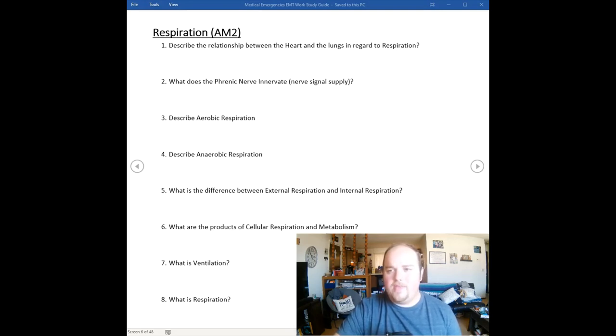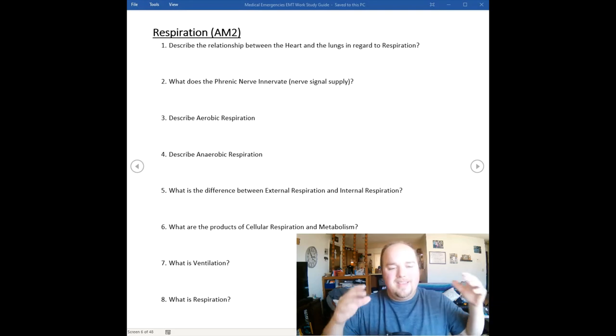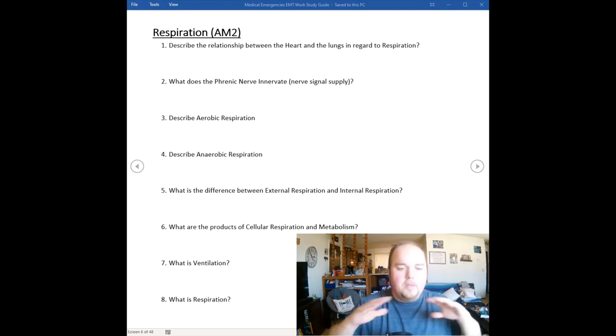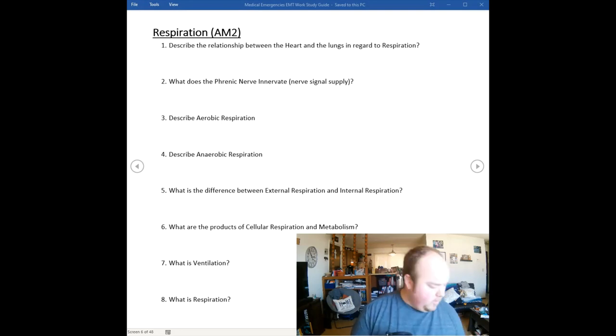External respiration is the exchange of respiratory gases between the alveoli and the pulmonary capillary beds. However, internal respiration is the exchange of those gases between the systemic capillaries, the body system, and the surrounding tissue beds.